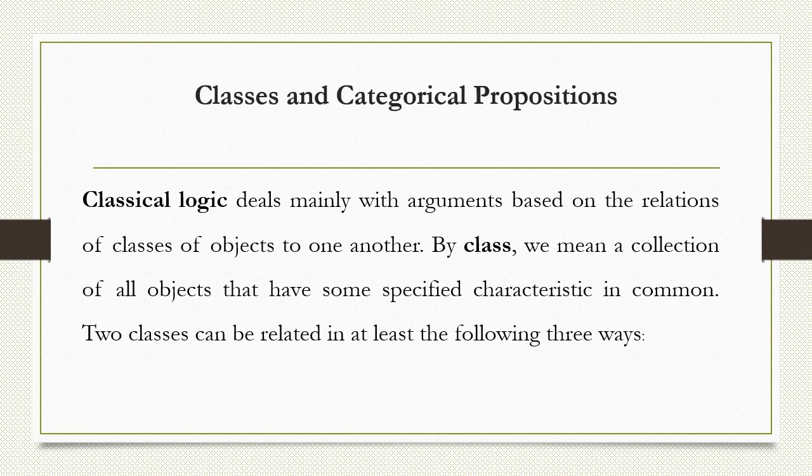Classical logic deals mainly with arguments based on the relations of classes of objects to one another. A class means a collection of all objects that have some specified characteristic in common. Now suppose there are two classes S and P — these two classes can be related in three ways.